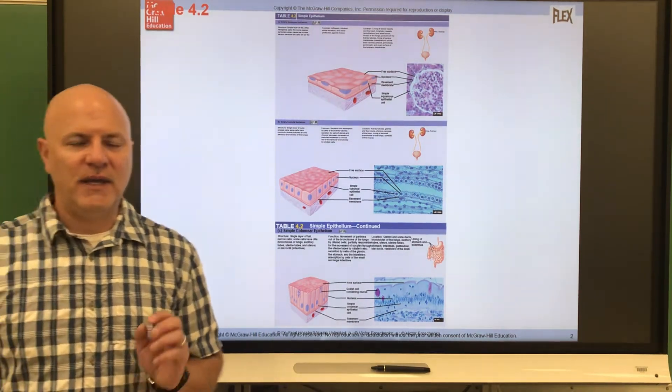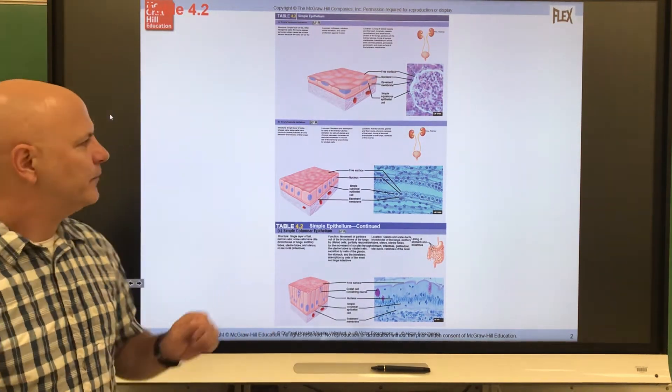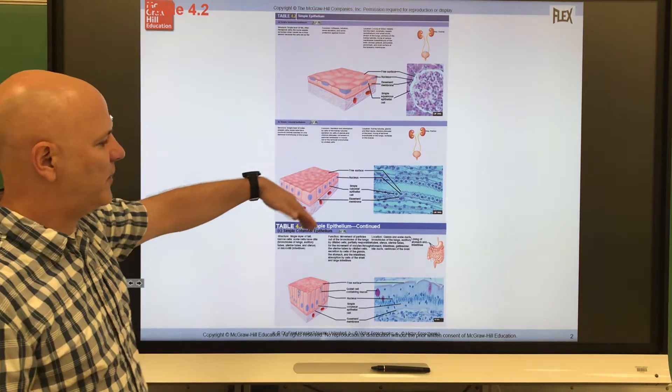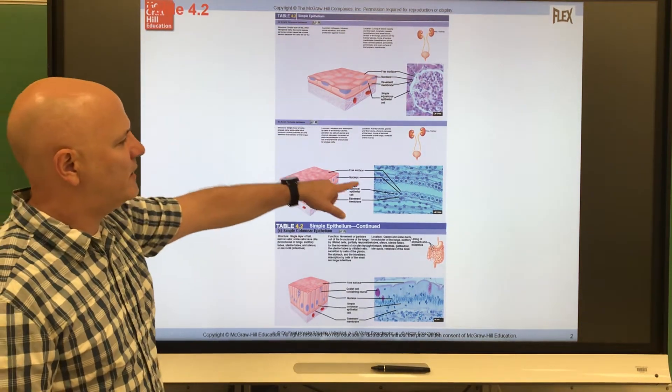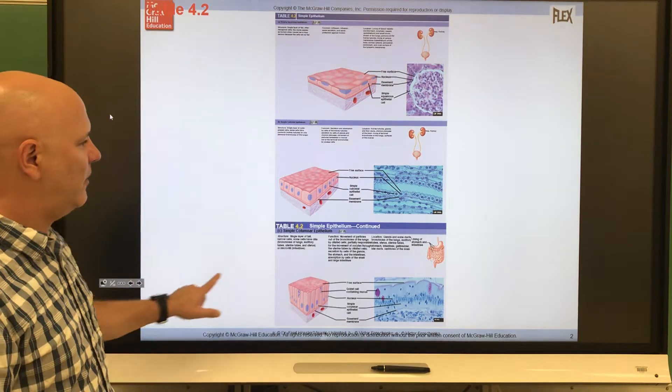Now there are four basic tissue types that we have. One is epithelial tissue, and the epithelial tissues are coverings. So this is showing a few different epithelial tissues here, right? Simple squamous, simple cuboidal, simple columnar.